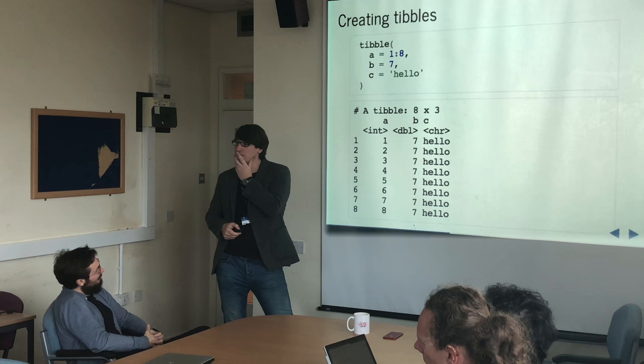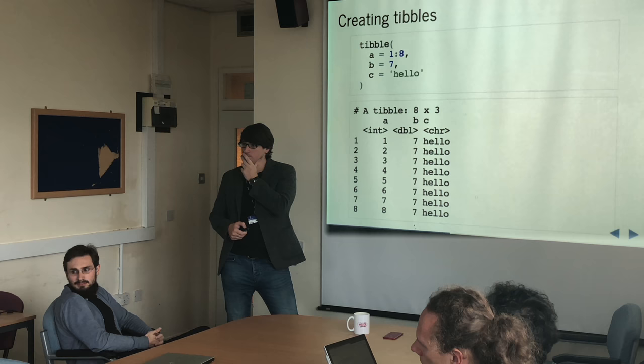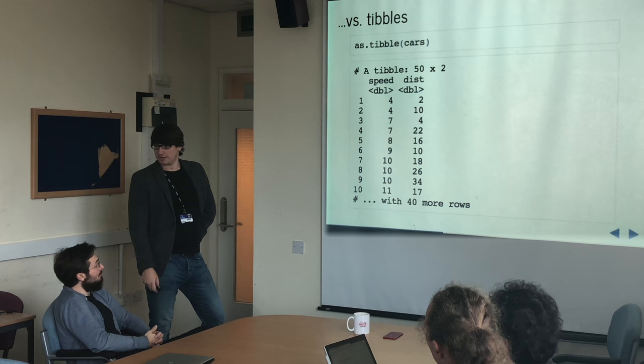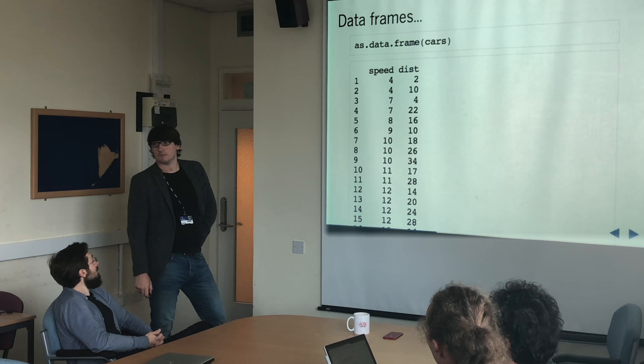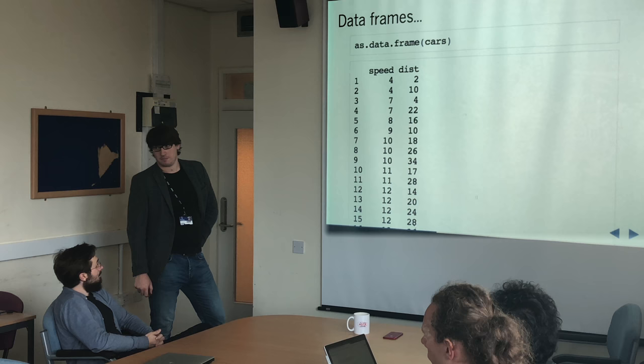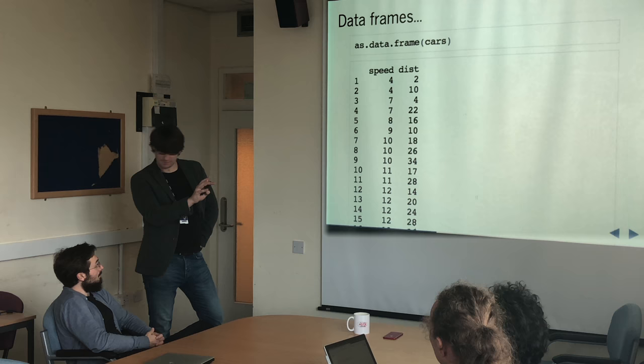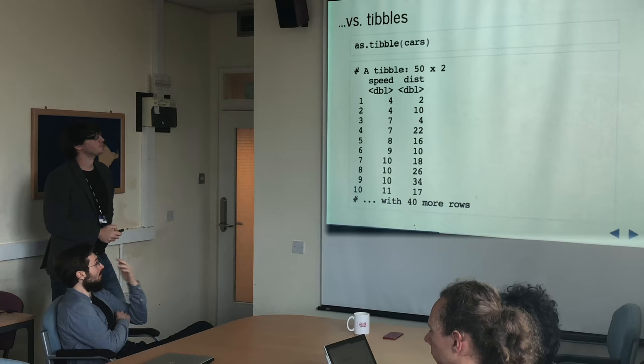The cars dataset looks like a two-dimensional array. Can I put any type into any element — could the cars dataset have mixed types in one column? No. So it's the same constraints as data frames. The tibble builds on the data frame; it's a data frame underneath with extra stuff around it. Cars is a data frame — data frame is your base data structure.